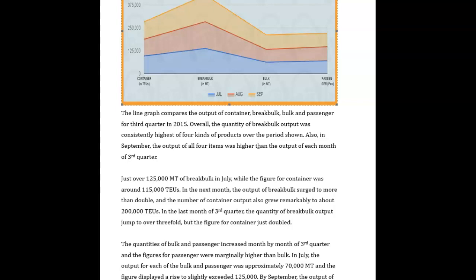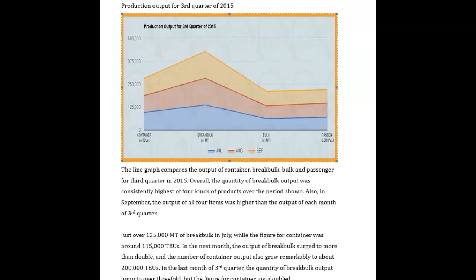I'm sensing here that you've misinterpreted this graph, and it's pretty common. This looks like a stacked line graph. What that means is that what you're seeing here, indicated by the orange, is actually the total.